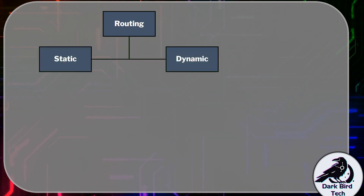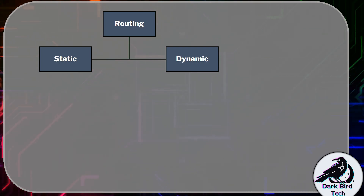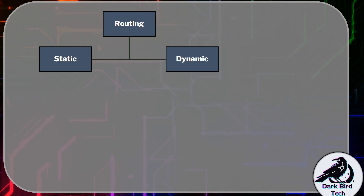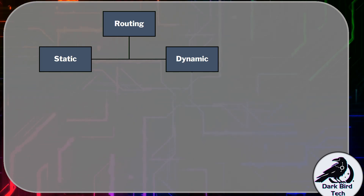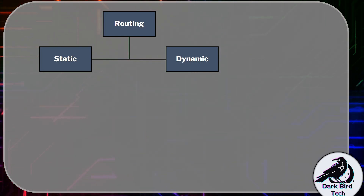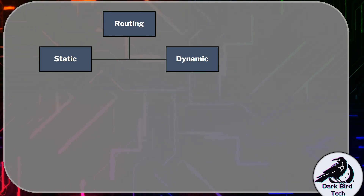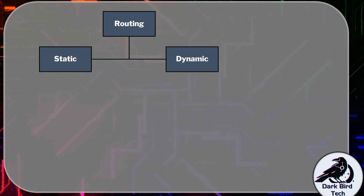The first branch of the family tree from routing is: are you going to do static or are you going to do dynamic? If you decide to go down the static branch, there's no further decisions to make, which is good, because you're going to need all that time and mental capacity to manage that static routing. With static routing, you've got to go to every router and configure every route to every destination network. Whereas with dynamic routing, we're going to have a bit of an advantage.